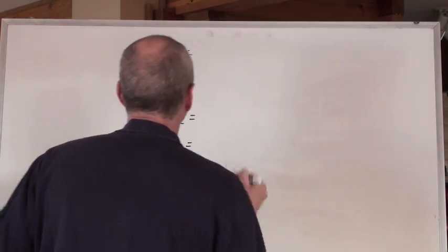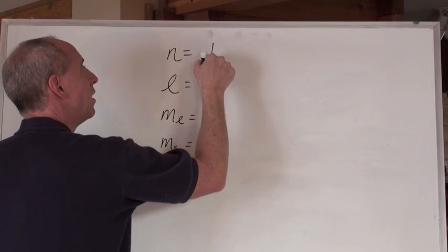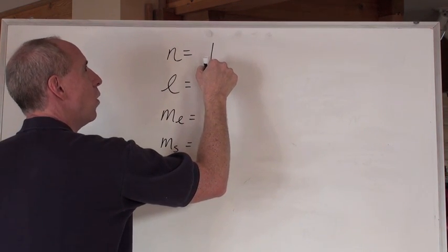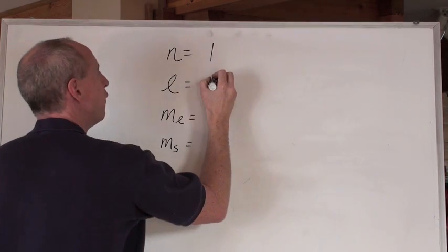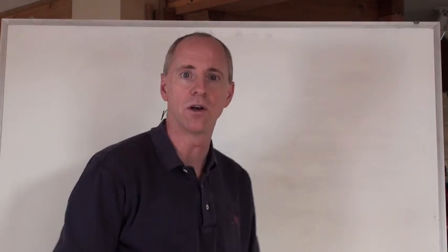So, for instance, if you have n equals one, your L starts at zero, but can only go to one less than one, which is zero, and therefore the only allowable value at n equals one for L is L equals zero.